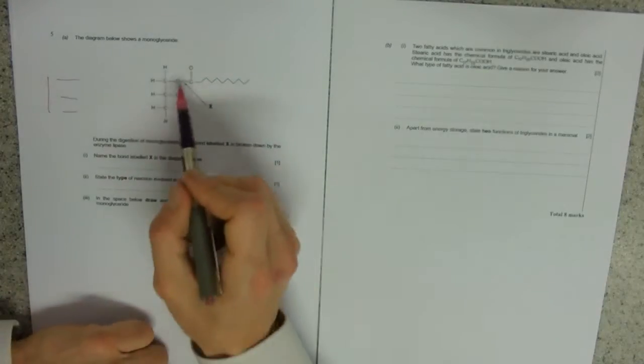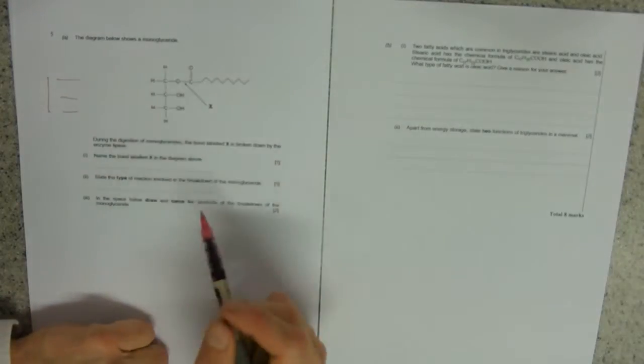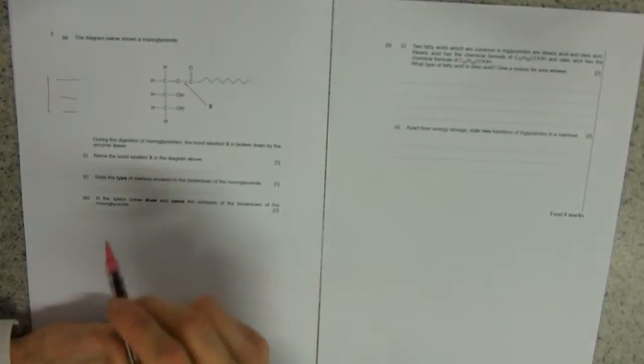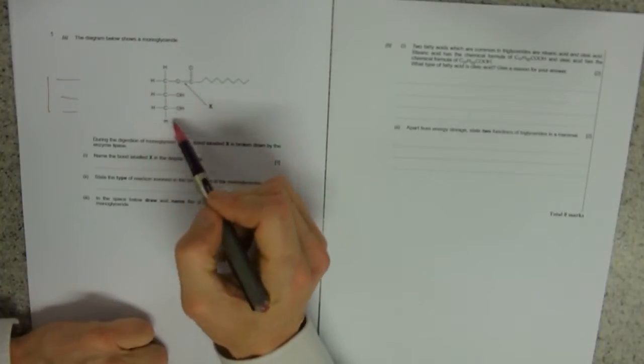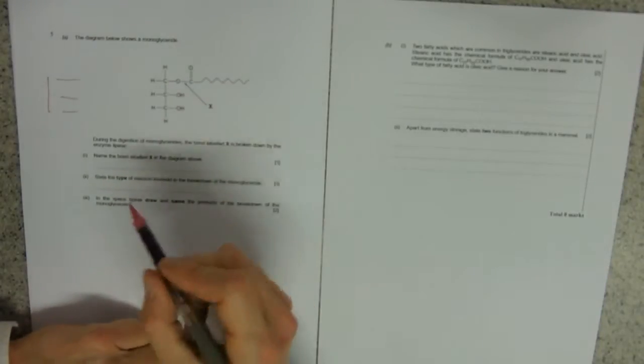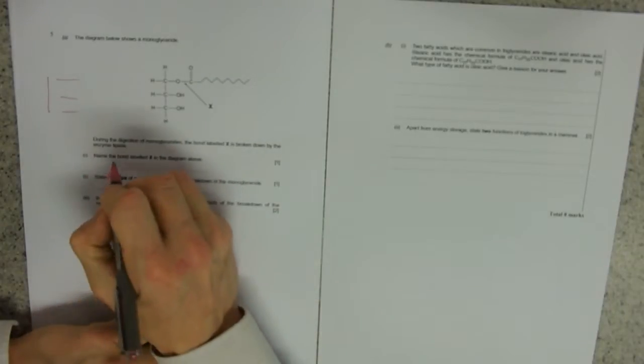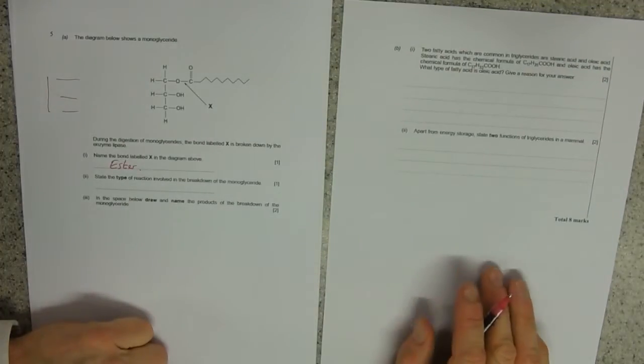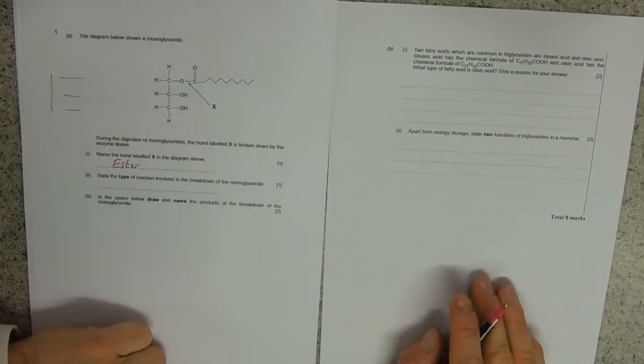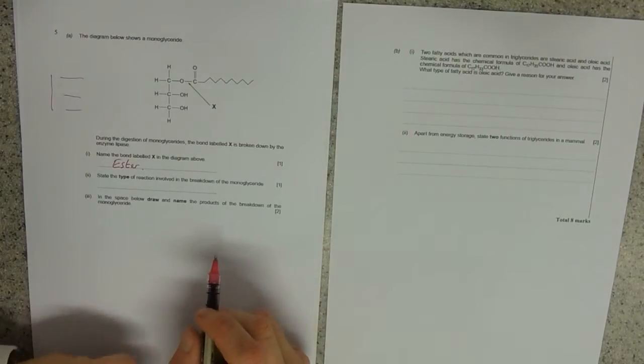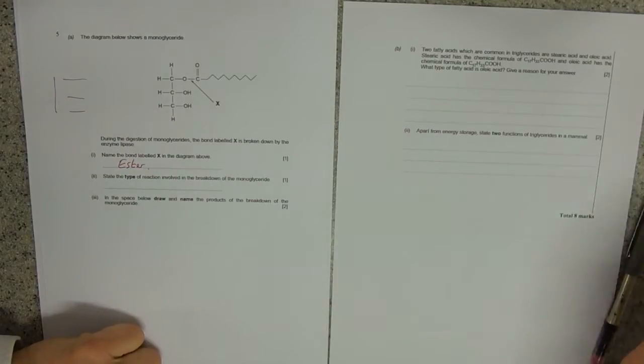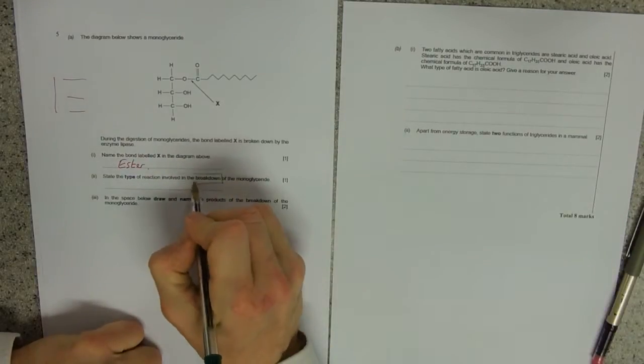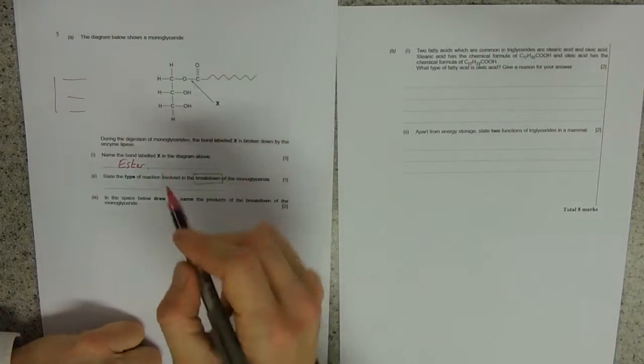Through, we should recognize that name. The bond formed by condensation reaction between the glycerol and the fatty acid is called an ester. Most common wrong answers are glycosidic and peptide. State the type of reaction involved in the breakdown, so not building up. If we broke this down, we'd have to add water, and that would be hydrolysis.